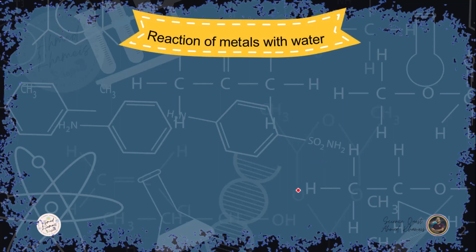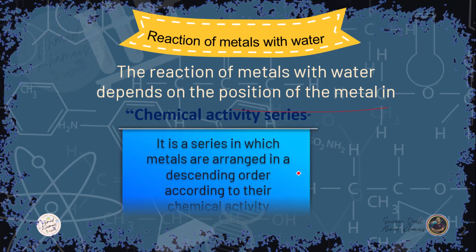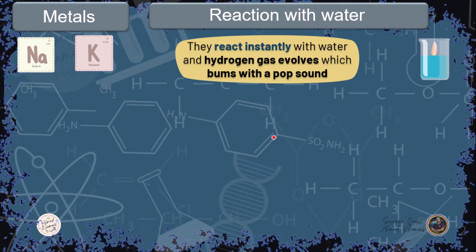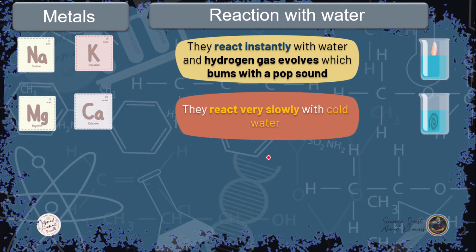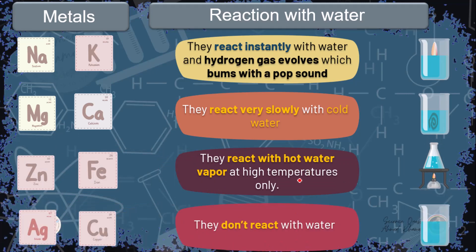The reaction of metals with water is determined by the chemical activity series — a ranking of metals in descending order from most to least reactive. Sodium and potassium react violently with water, producing hydrogen gas that burns with a pop sound. Magnesium and calcium react very slowly with cold water. Zinc and iron react only with hot water vapor at high temperature. Silver and copper do not react with water.